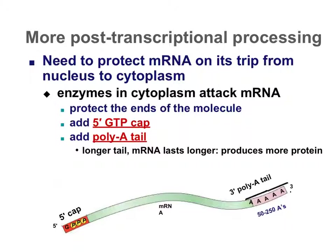Along with mRNA splicing to remove introns, there are two other processing steps that protect the mRNA and keep it intact. The first is a 5' GTP cap — guanine triphosphate — added to one end. On the other end, a poly-A tail consisting of many nucleotides is tagged on. These modifications protect the mRNA strand from unraveling.